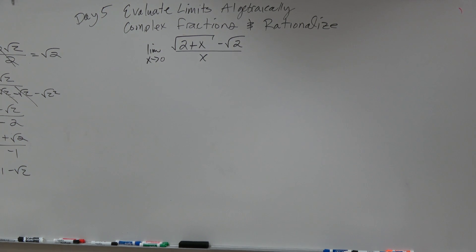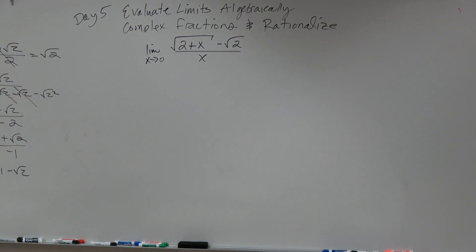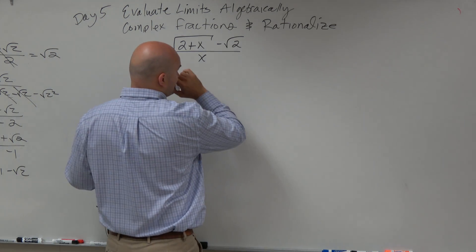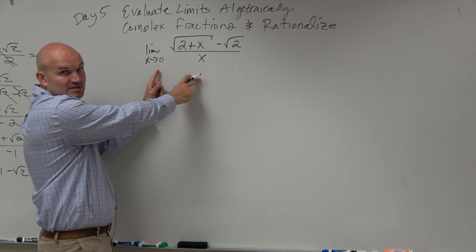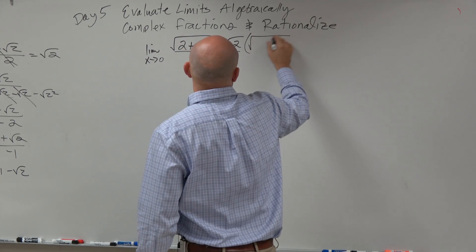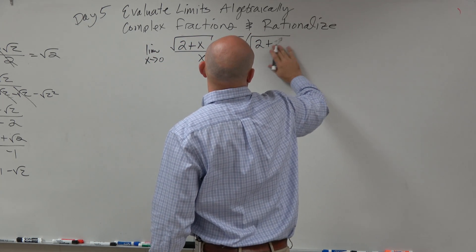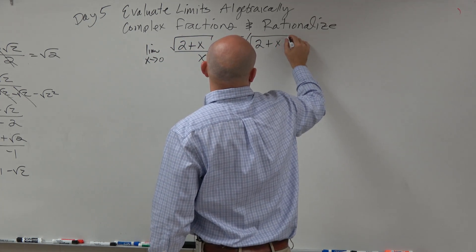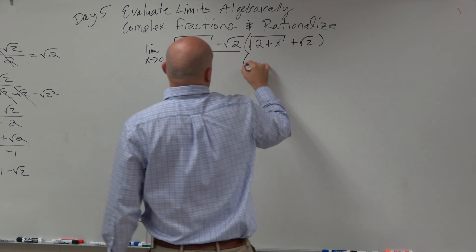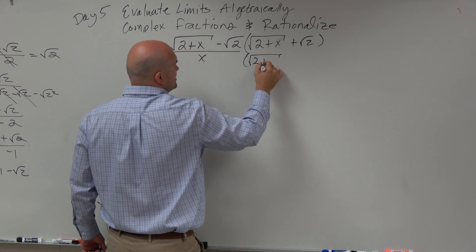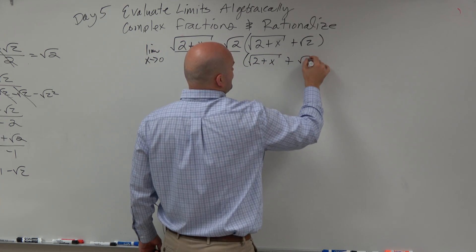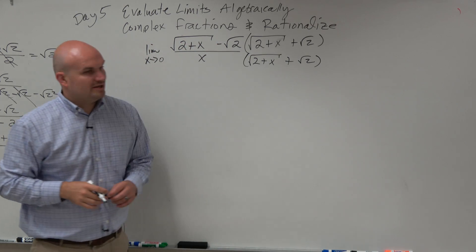On this one we have a radical, so we want to rationalize these radicals to evaluate this limit. The first thing I'm going to do — I know that direct substitution won't work, I always want to check that — and I'm going to rationalize the radical. So I'm going to multiply by the square root of 2 plus x plus the square root of 2, and whatever I do in the denominator I have to make sure I do in the numerator.